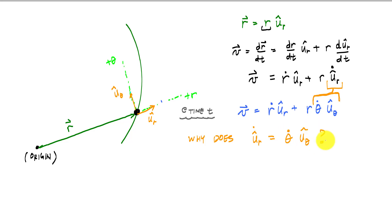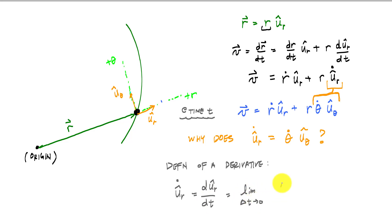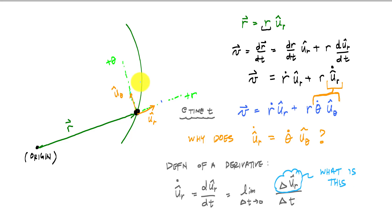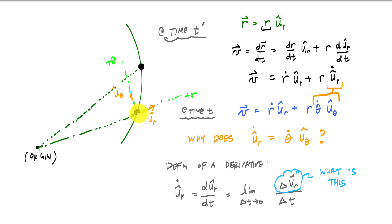If we think about the definition of a derivative, du_r_hat/dt is the limit as delta t goes to zero of the change in u_r over the change in time. The question now is: what is this delta u_r — what is this change in the radial unit vector? At time t, my particle is here; at time t prime, the particle has experienced a small change in angle.